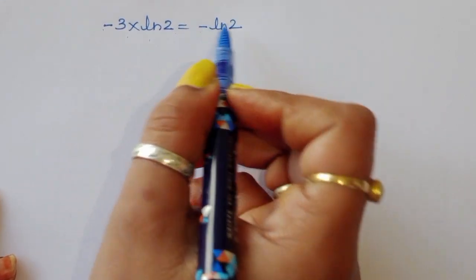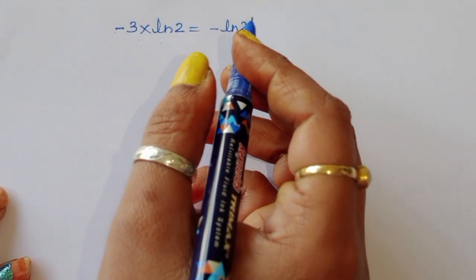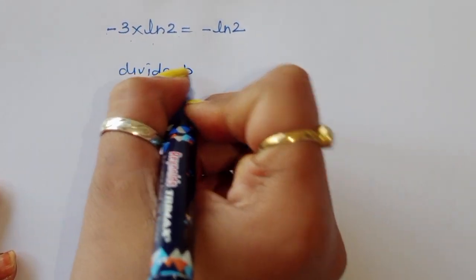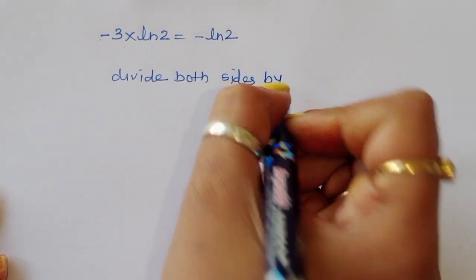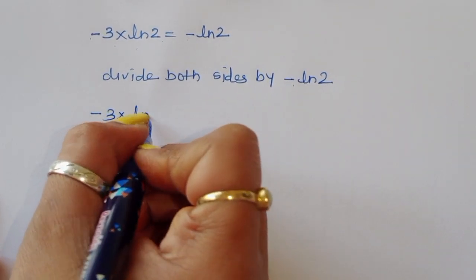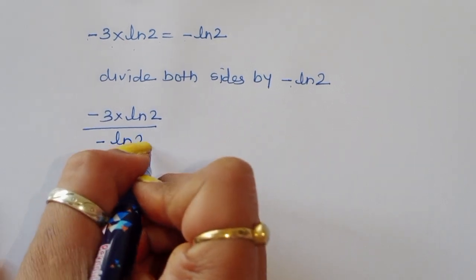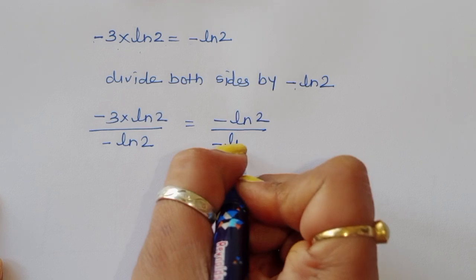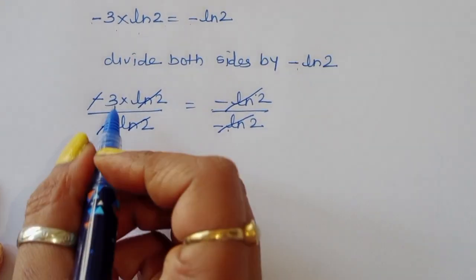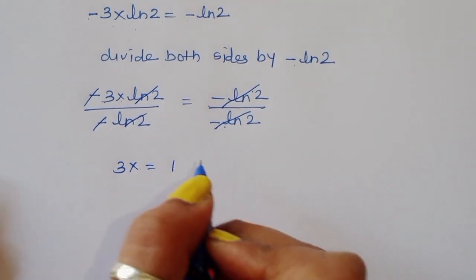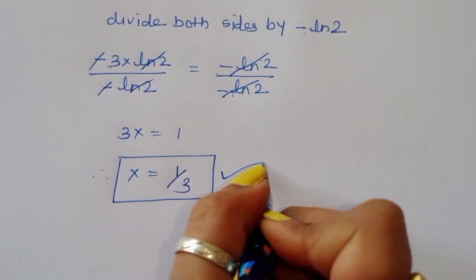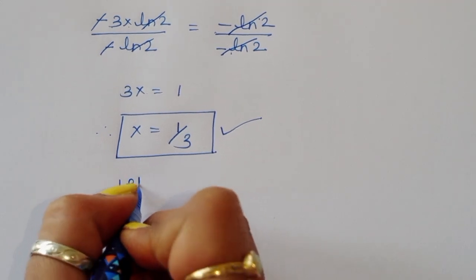So minus 3x ln of 2 is equal to minus ln of 2. We divide both sides by minus ln of 2. The minus ln of 2 cancels on both sides, leaving 3x equal to 1. Therefore x is equal to 1 upon 3. This is the correct solution for this equation.